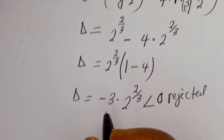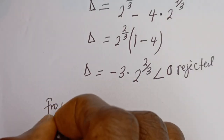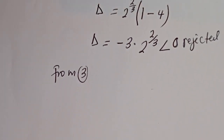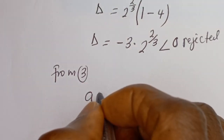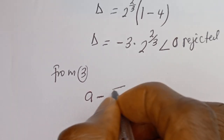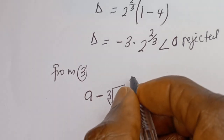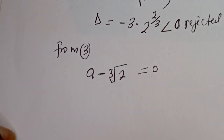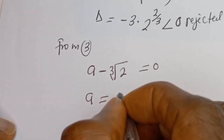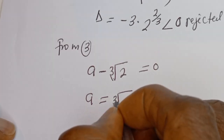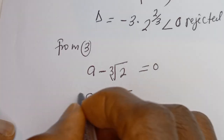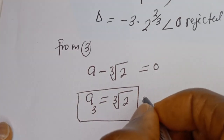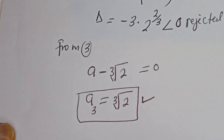Now let's consider the third case. We have a minus cube root of two equals zero, so a equals cube root of two. Let's call this a₂. This is also a real solution.